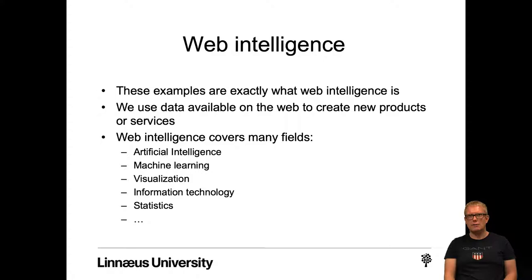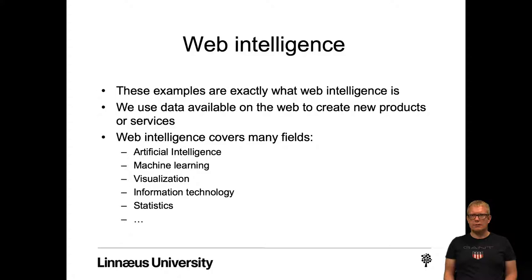These examples are exactly what web intelligence is. We use data available on the web or in our system that the user generates and we create new products or services. Web intelligence covers many fields: artificial intelligence, machine learning, visualization, information technology, statistics, programming and much more.